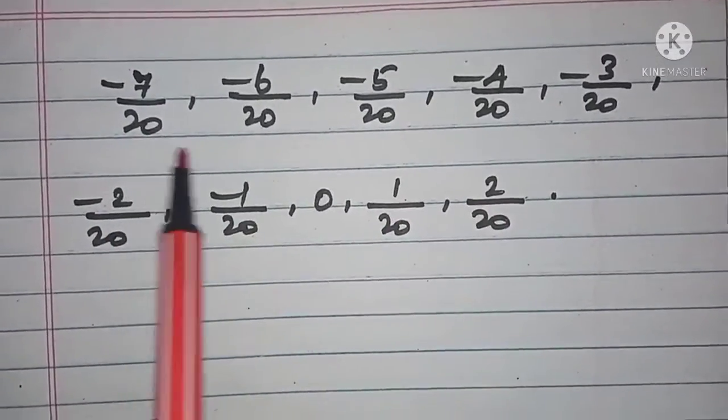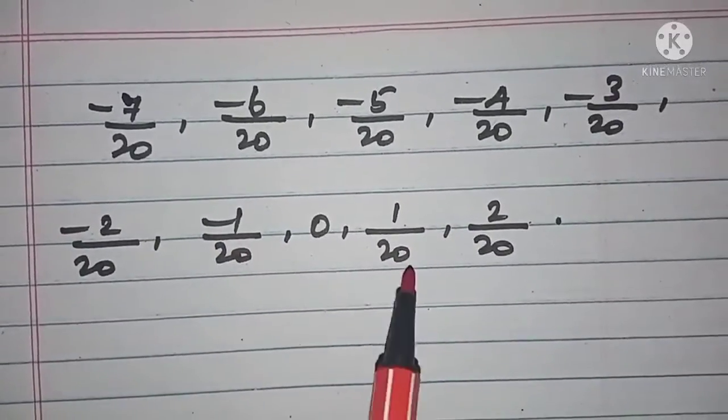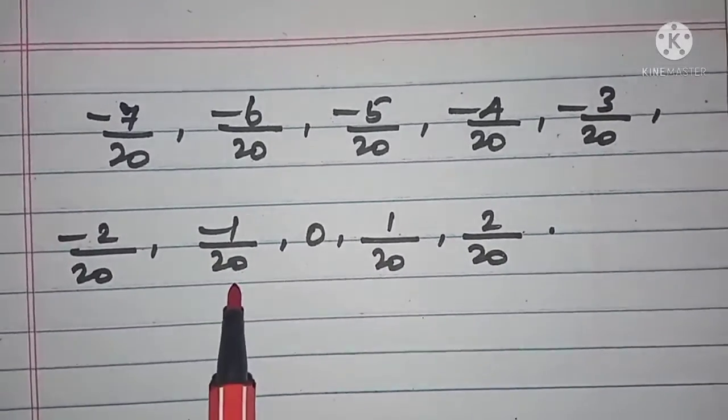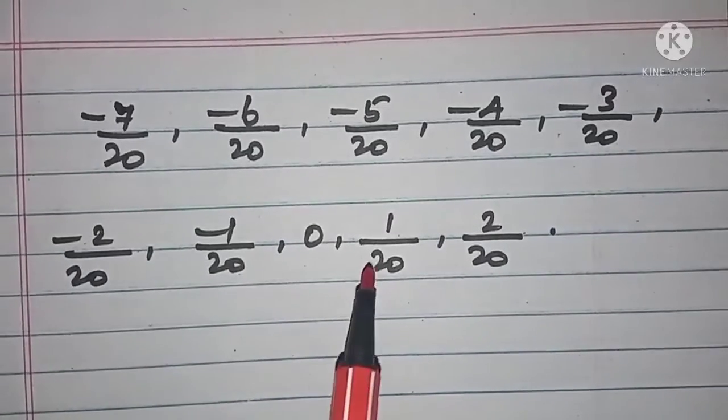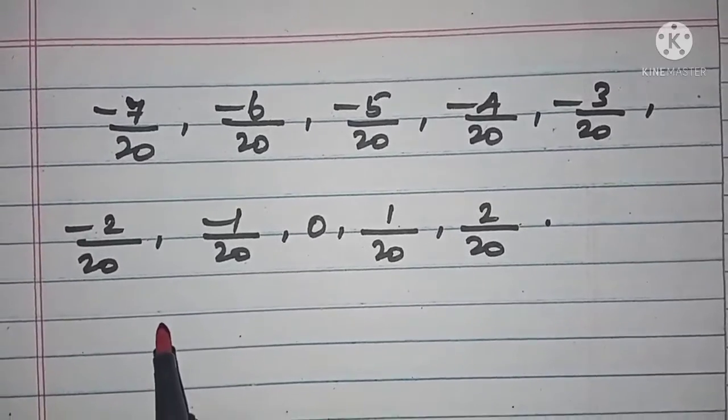The denominator will be common for all the numbers—20, 20, 20. So this is how you have to select the numbers in between the first and the last. I hope you all understood this concept very well. Thanks for watching, subscribe to our channel for upcoming videos.